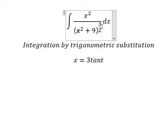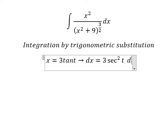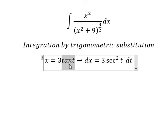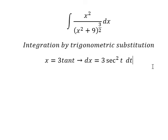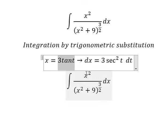We simplify the power 3/2, and for dx we have dx = 3 sec²(t) dt, because the first derivative of tan(t) is sec²(t). I will put this substitution into the integral.